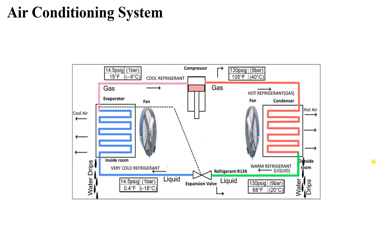To summarize the air conditioning cycle: we start with a cool refrigerant at, say, negative 9°C. The compressor increases its temperature and converts it to gas. The condenser with its fan cools it down — hot air is released outside — and its temperature drops to around 20°C. The expansion valve then expands the compressed refrigerant, dropping its temperature significantly. It then passes through the evaporator where its temperature rises from about negative 18°C back to negative 9°C, completing the cycle.